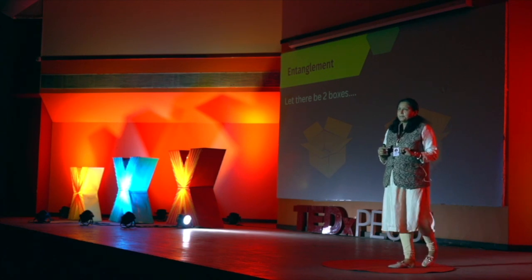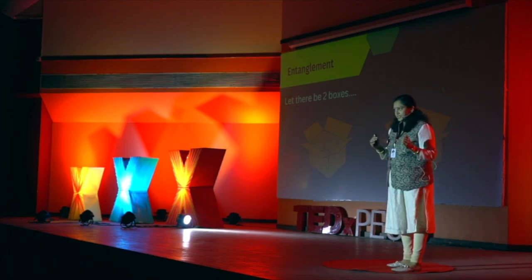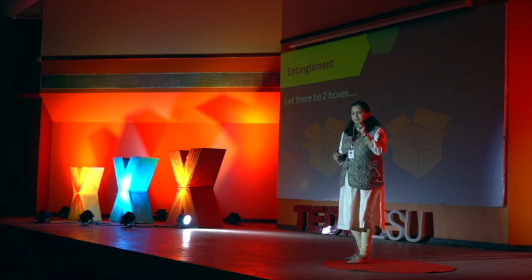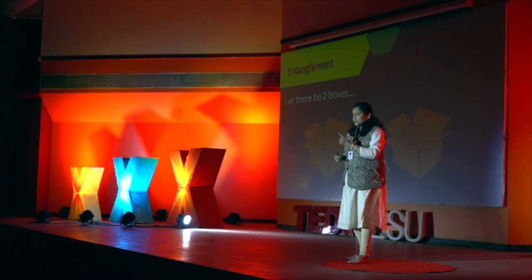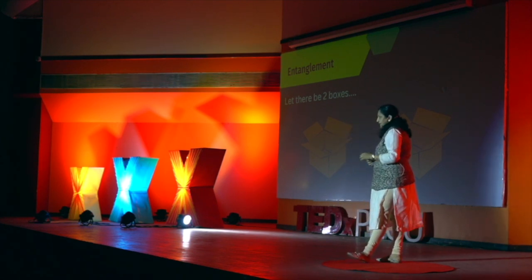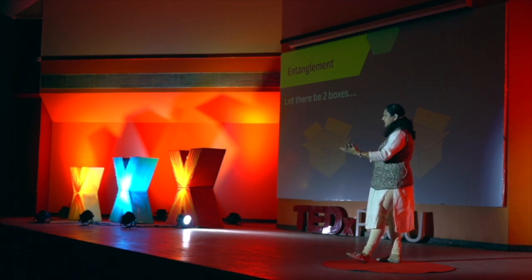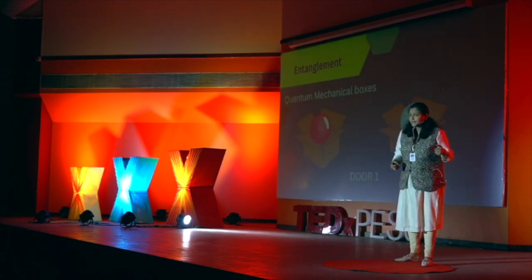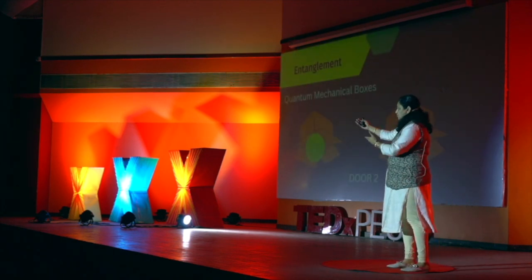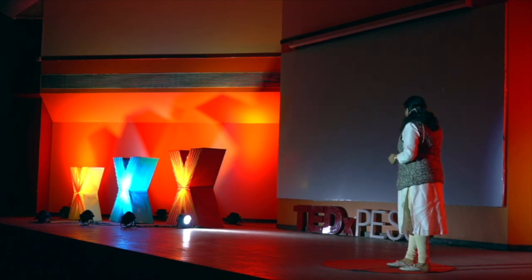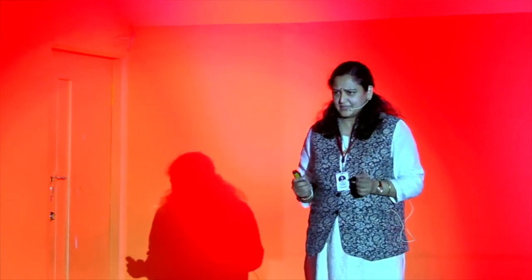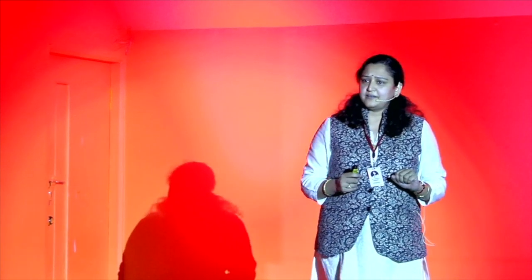Now we come to another interesting fact: how the measurement changes the state of the system. We'll open door two of magic box one. Door two represents a different kind of measurement. In the classical world, whichever door I opened, I always got the same result — very boring. But in the quantum box, if I open door two of magic box one and door two of magic box two, I can see green and yellow colors. All have changed their colors, which is very fascinating and not possible in the classical world. The measurement affects the state of the quantum system.